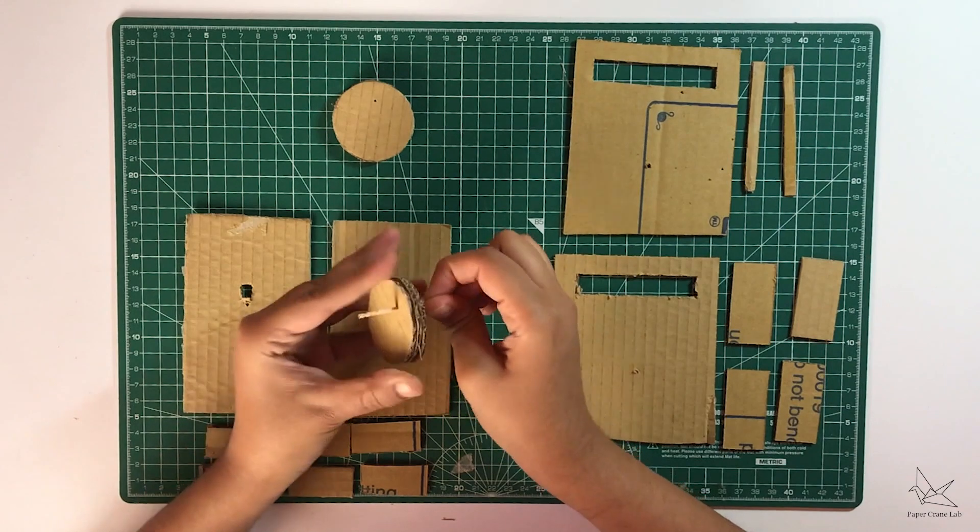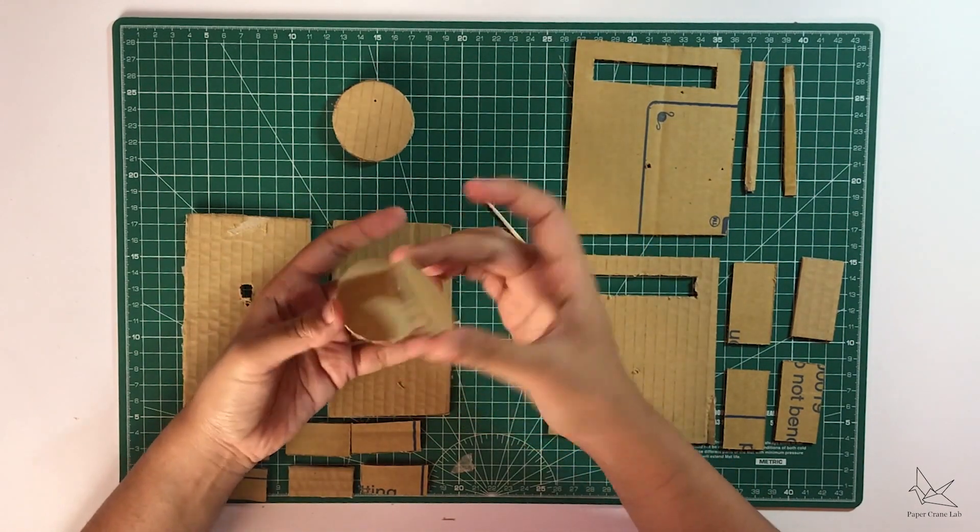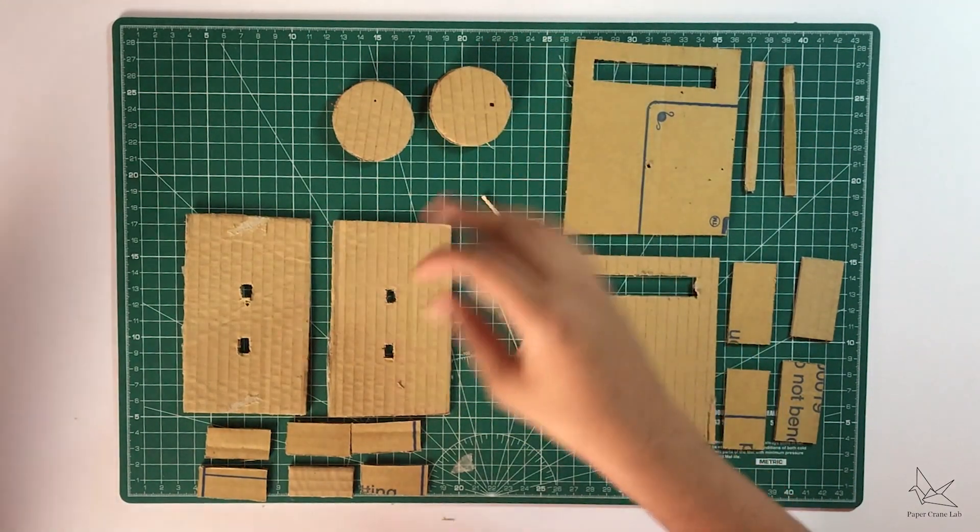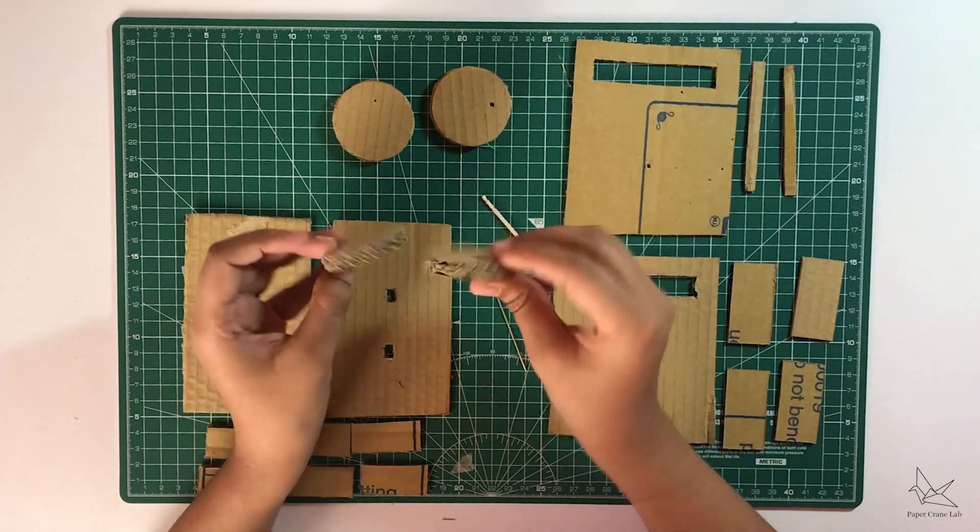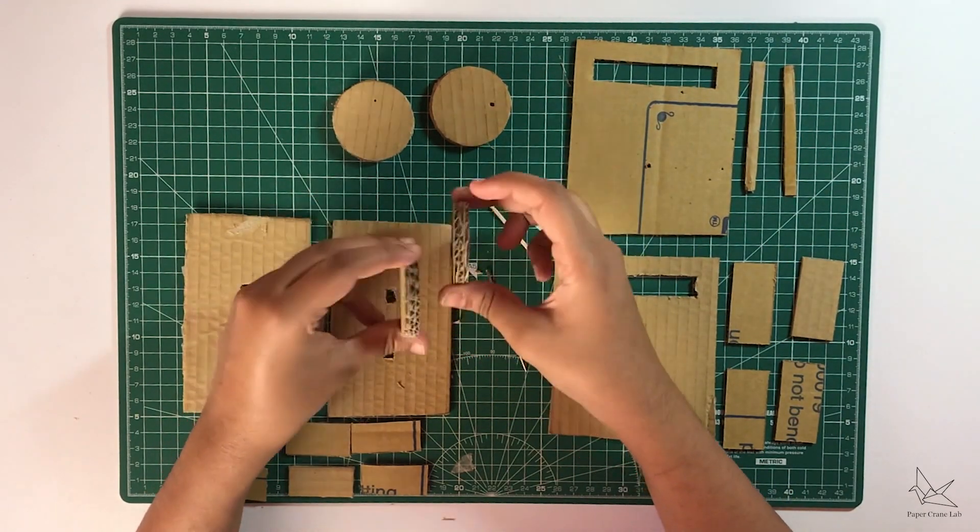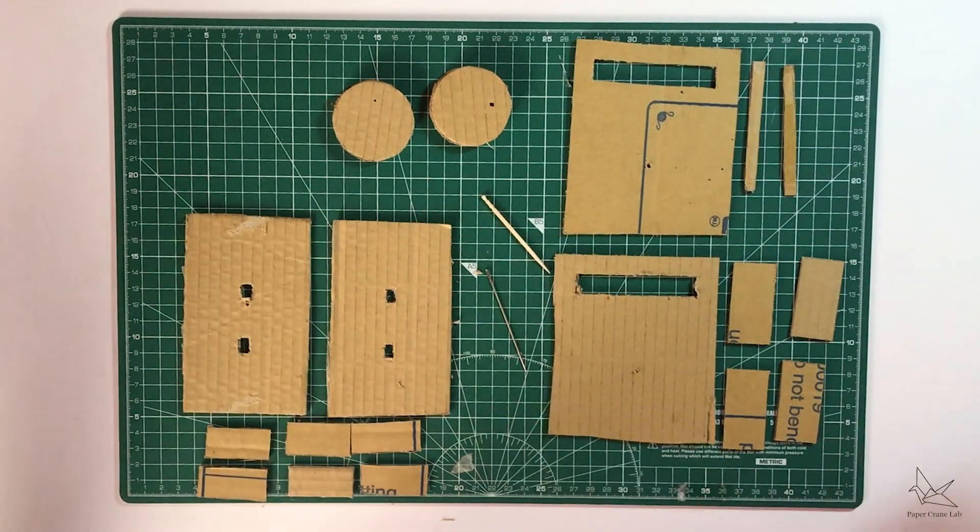So now that we have this, what we're going to be doing next is sticking these three together so that they form a stack like this. We need two stacks like this. This is going to be the discs that are rotating in our mechanism.